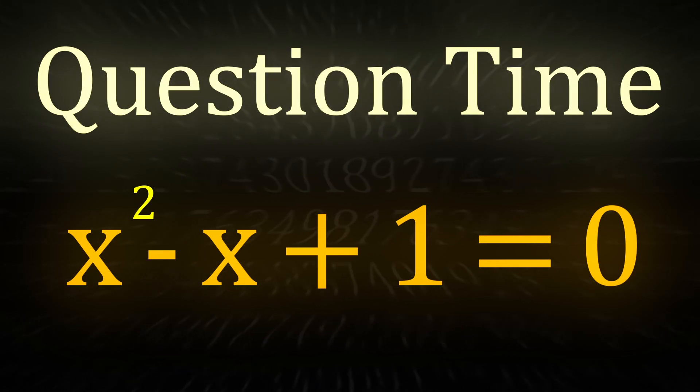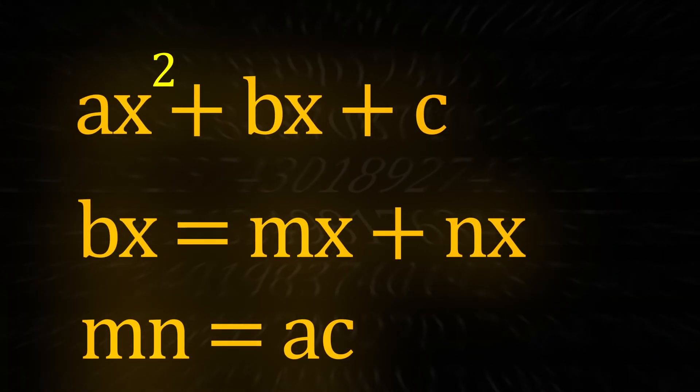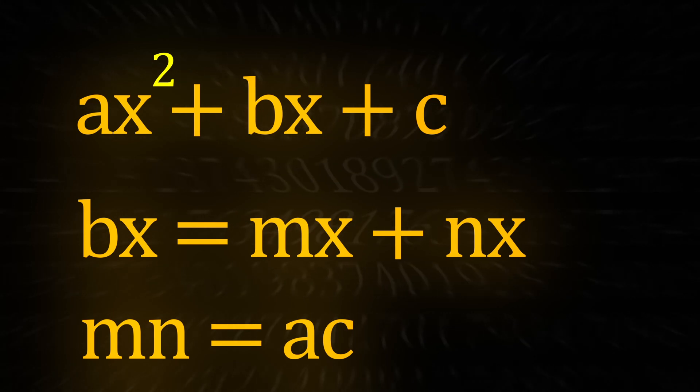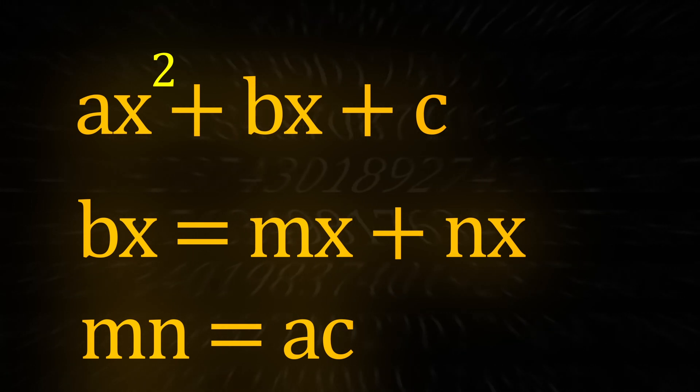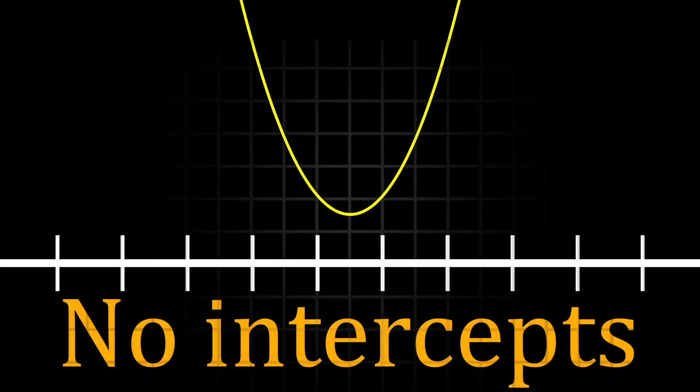x squared minus x plus 1 equals 0. When I saw this question, I immediately jumped at my trusty quadratic factorization, the superior way of solving a quadratic equation. Though, I quickly realized that I couldn't split this middle term properly. The reason is because the equation completely misses the x-axis, meaning it has no solution.